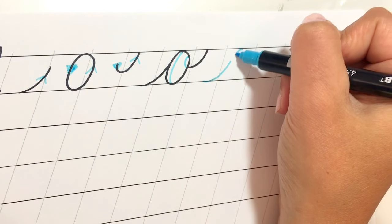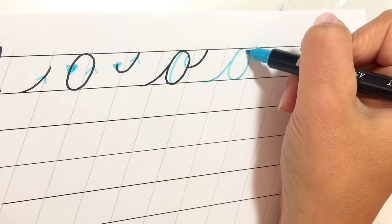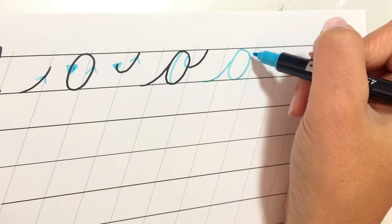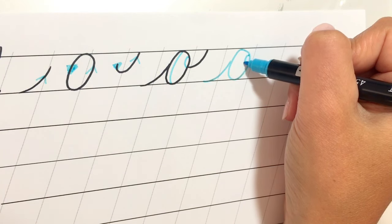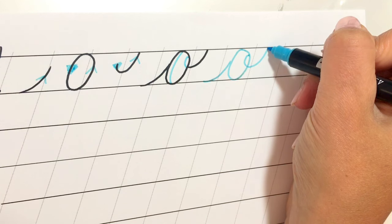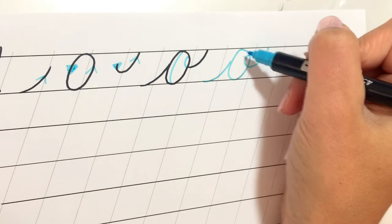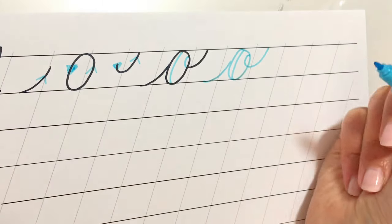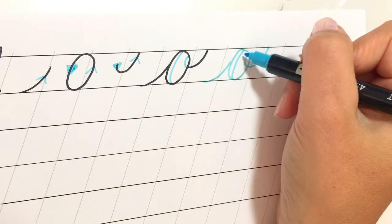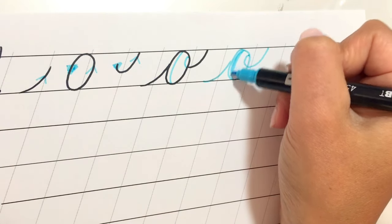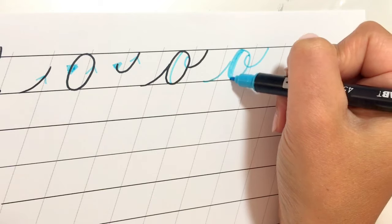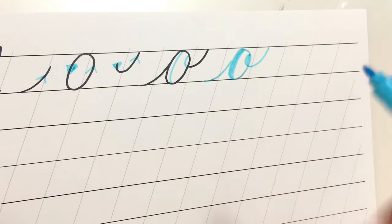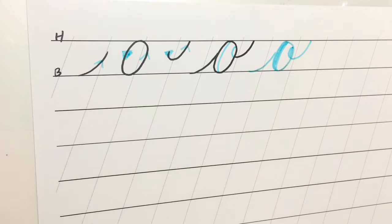So we have the entrance stroke, oval, and then you could come and make this one continuous line which will give you the shading on the inside. Or you can come back and fill it in. That's one way to make the O.